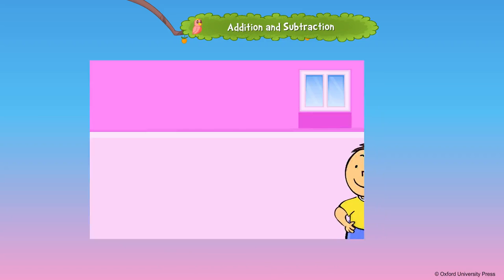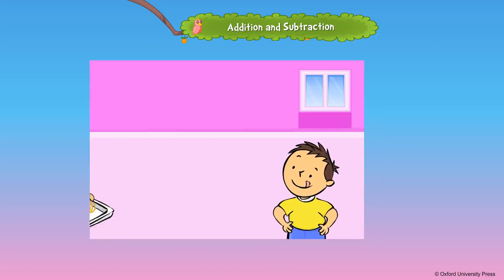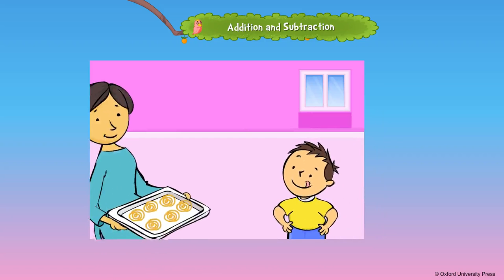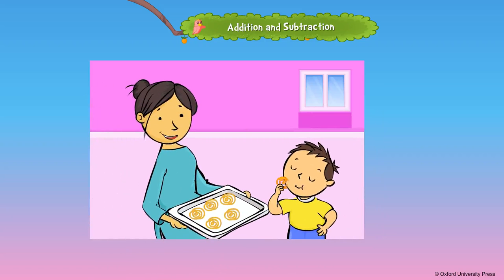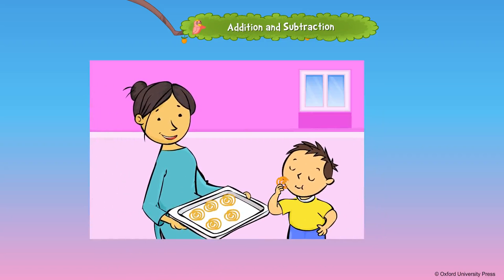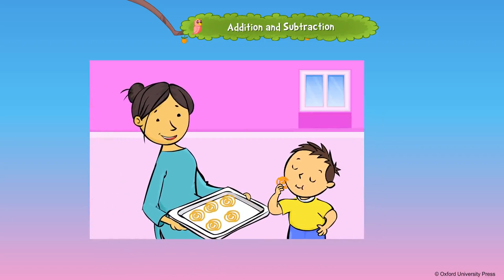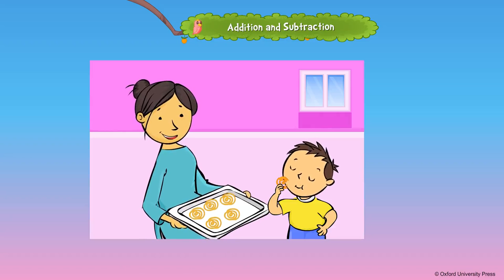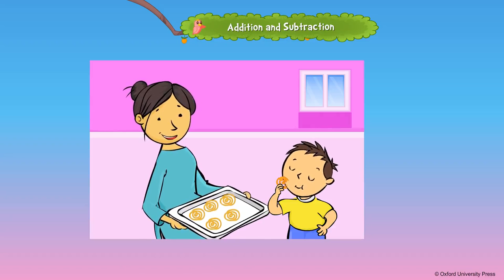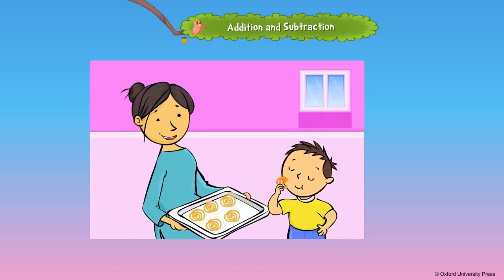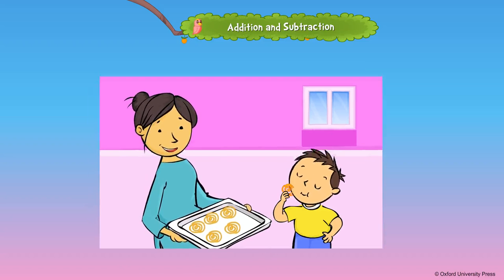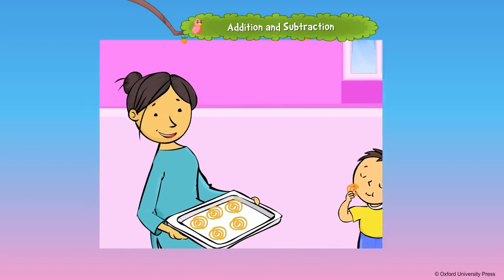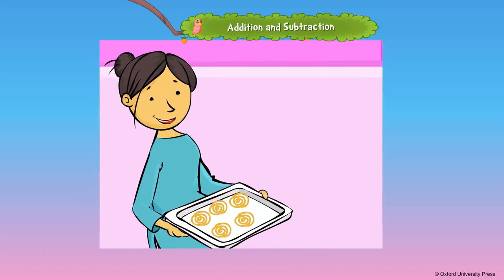Hari's mother made six jalebis. Hari took and ate one jalebi. One less than six is five, so Hari's mother has five jalebis left.